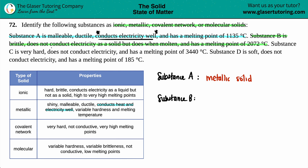So here we go again with that conducting electricity. It does not conduct electricity as a solid, but does when it's molten — meaning it's basically in a liquid form. There's only one type of crystalline solid that will conduct electricity not as a solid, but as a liquid or if it's dissolved. That's the ionic one — conducts electricity as a liquid, but not as a solid. So substance B has to be an ionic solid.